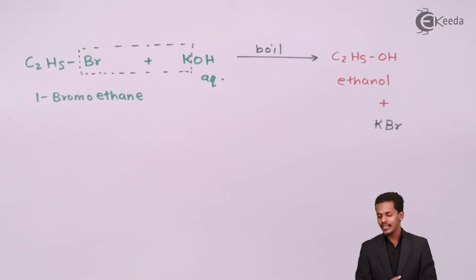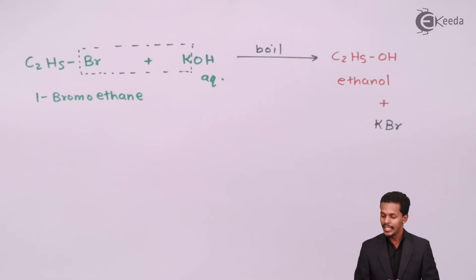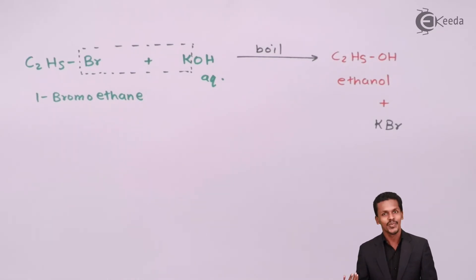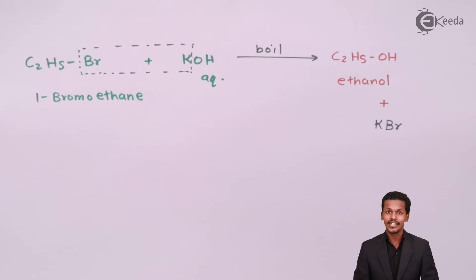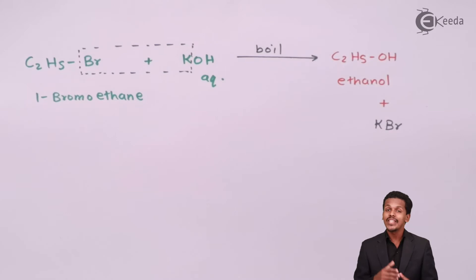We can use aqueous NaOH (sodium hydroxide) as well — since it is also a base, the main product remains the same; only the byproduct differs (NaBr instead of KBr). That concludes the first chemical property. Now let us discuss the reaction of alkyl halide with moist silver oxide.